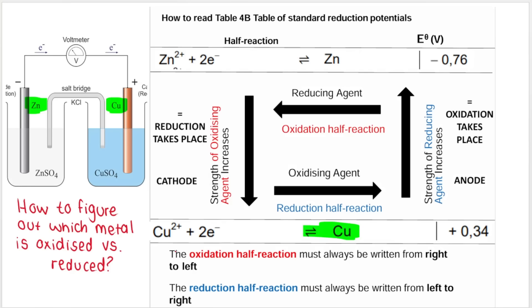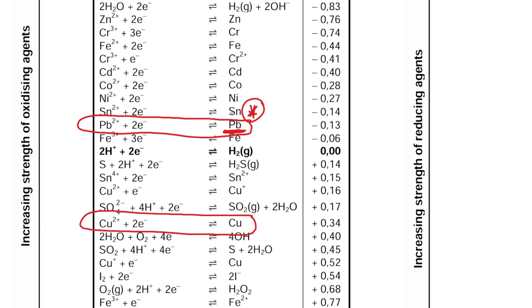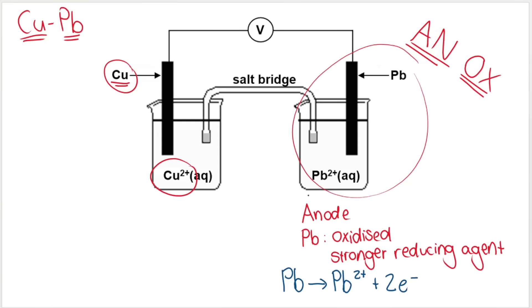In our example we have lead instead of zinc. The half reaction on the table is Pb2+ + 2e− ⇌ Pb. Since oxidation takes place at the top and the oxidation half reaction must always be written from right to left, we write Pb first (the right-hand side), then the arrow, then Pb2+ + 2e−. Note we write it with a single arrow — this represents the oxidation half reaction. Pb is being oxidized, Pb is losing electrons, it is the stronger reducing agent.